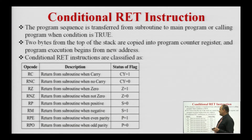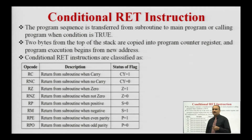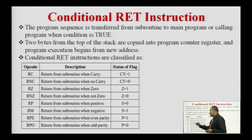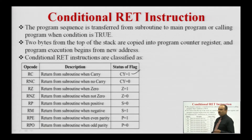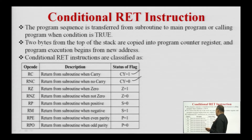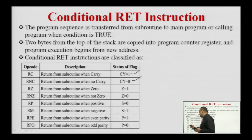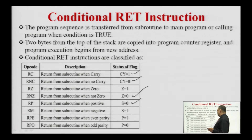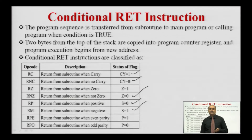When the microprocessor executes a conditional return instruction and the condition is true, it transfers control from the subroutine to the main program by picking the returning address and loading it into the program counter register. RC — return when carry flag is set; RNC — return when carry flag is reset; RZ — return when zero flag is set; RNZ — return when zero flag is reset; RP — return when sign flag is 0 (number is positive); RM — return when number is negative; RPE — return when parity is even; RPO — return when parity is odd.